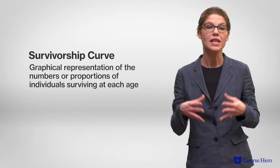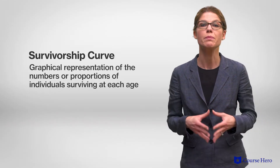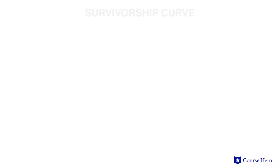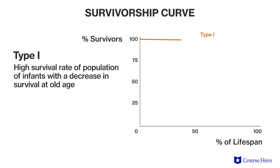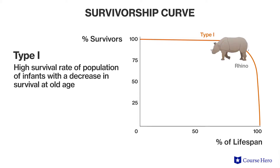A graphic method of representing data in a life table is a survivorship curve. Type 1 curves indicate high survival rates for populations of infants with a decrease in survival at old age. Humans, rhinos, and elephants fall under the type 1 curve category.